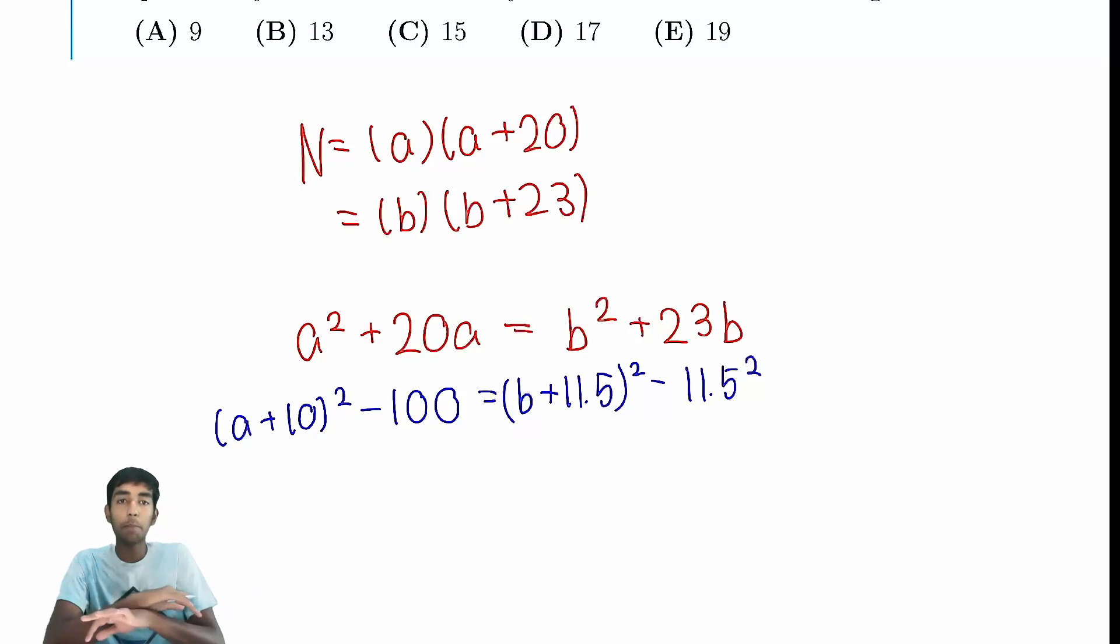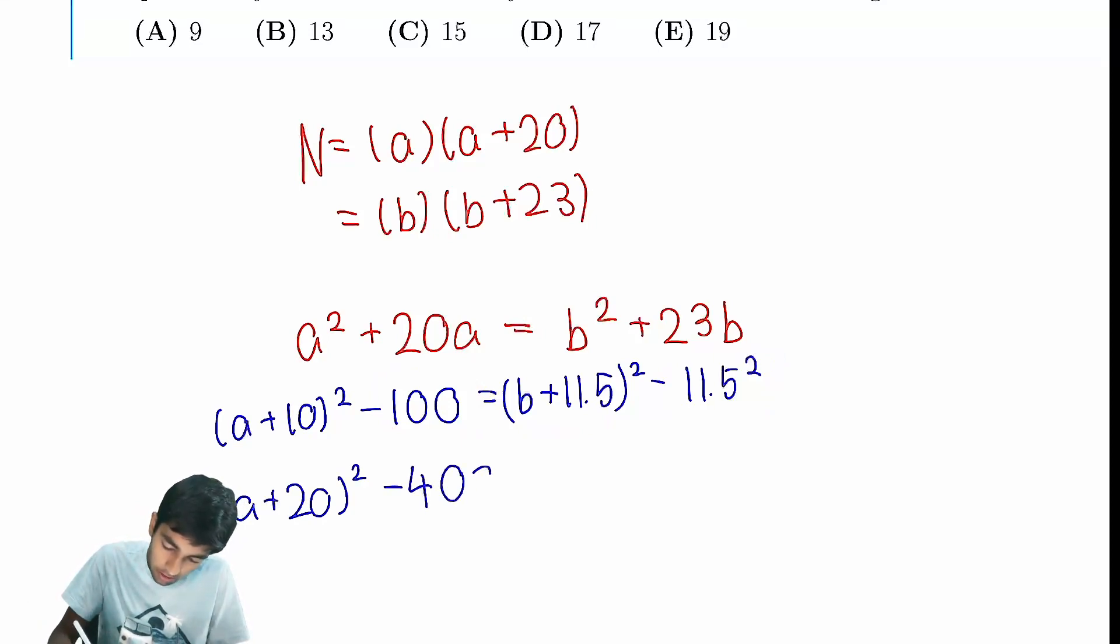So the thing is, let's just multiply this whole thing by 4, the whole thing. So what that will do is multiply by 2 inside the square, because we're squaring it, and multiply by 4 to this term and this term. So multiplying by 4, we get 2A plus 20 squared minus 400, and by the way, this is just 4N, in case you were wondering.